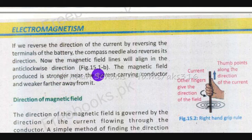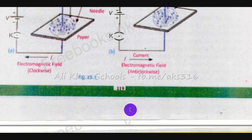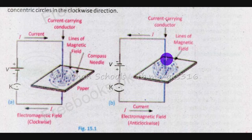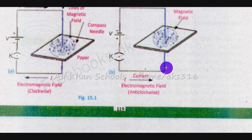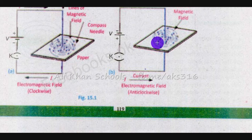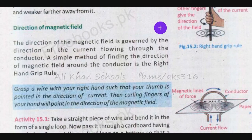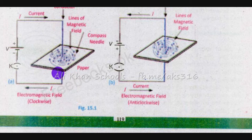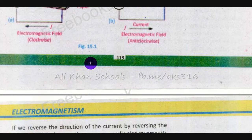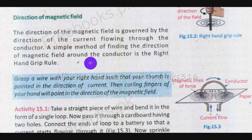The magnetic field is stronger near the current-carrying conductor and weaker farther away from it. The direction of the magnetic field is governed by the direction of current flowing through the conductor.